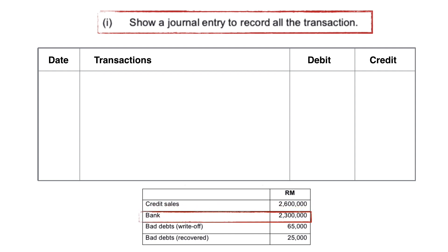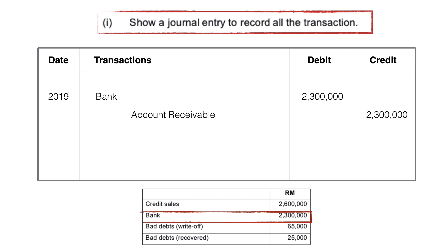Next, we will be recording the collection from accounts receivable. We put 2019 for the date and we debit bank as indication that we receive money. Next, we will credit accounts receivable as the accounts receivable decreases.